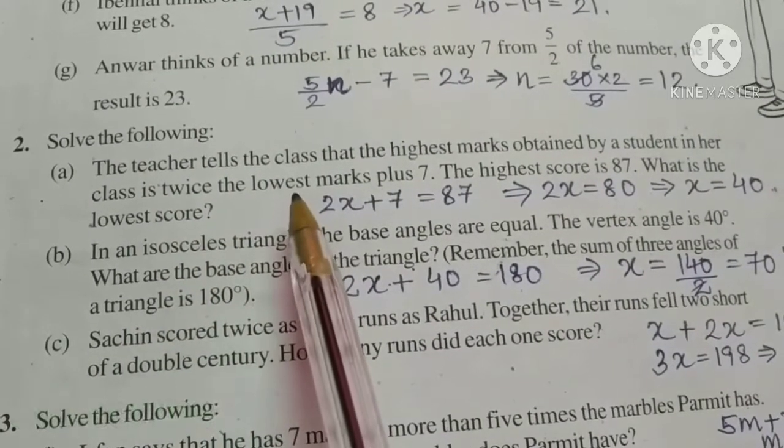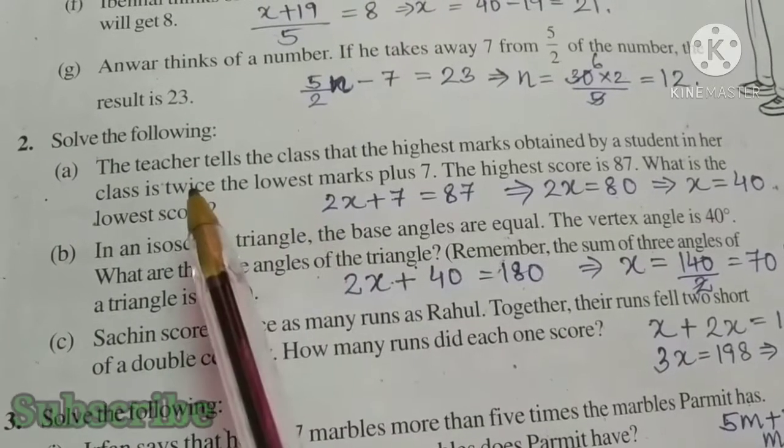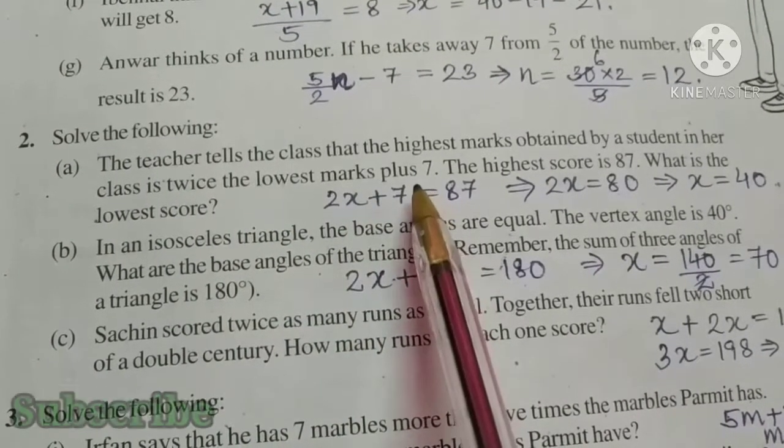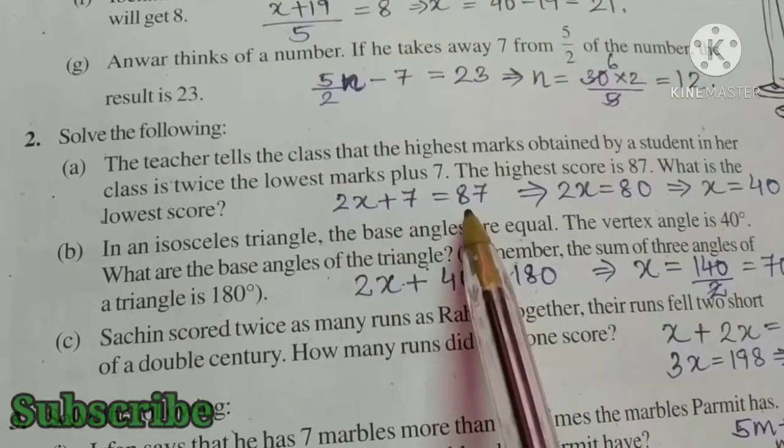So, let us take lowest score as x. Twice the lowest score plus 7 is the highest score. So, 2x plus 7 is equal to 87.